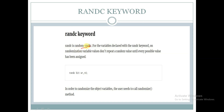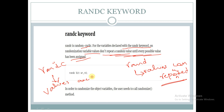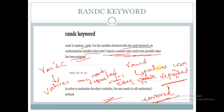randc keyword — randc is random cyclic. For variables declared with the randc keyword, values don't repeat a random value until every possible value has been assigned. In case of rand, values can be repeated, whereas in the case of randc, values are not repeated until every possible value has been assigned. Here, wr_rd is of bit data type and it is declared as randc.